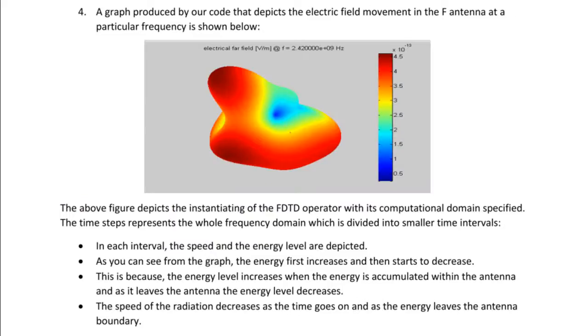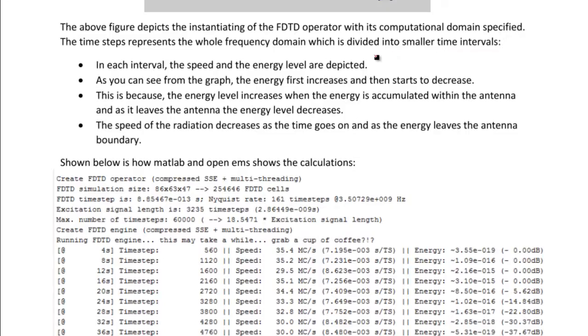Alright, so this is an electric far field graph of our inverted F antenna. As you can see, it is kind of omnidirectional and that is one of the important properties. It is being depicted at a frequency of 2.4 GHz. The time step represents the whole frequency domain, which is divided into smaller time intervals.